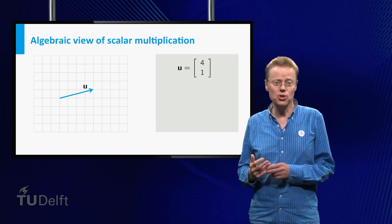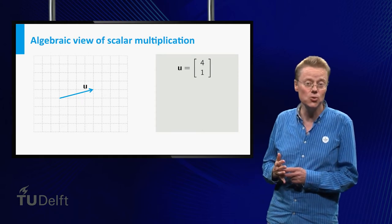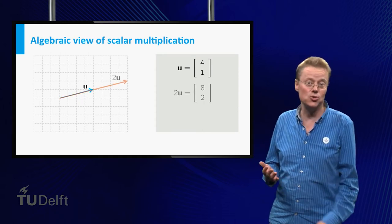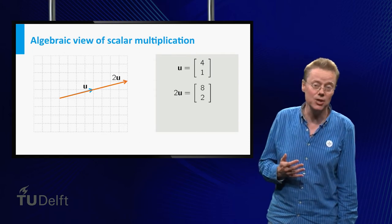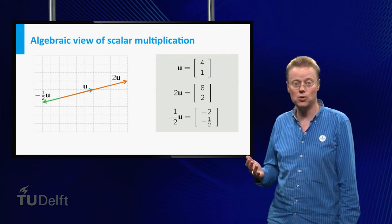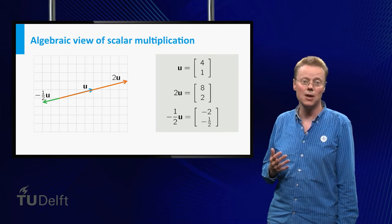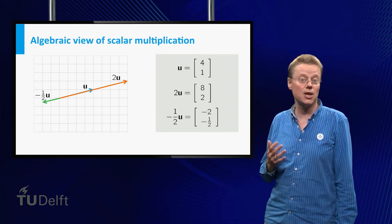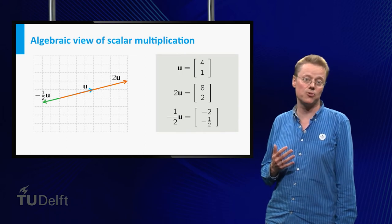Multiplying the vector u = (4, 1) by 2 gives (8, 2), of course. Multiplying u by −½ leads to (−2, −½). This can be seen from the geometric representation as well as from the algebraic representation.